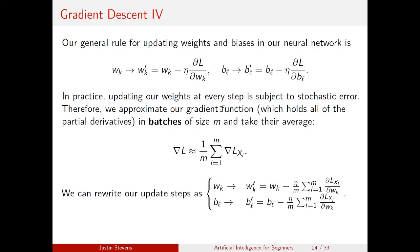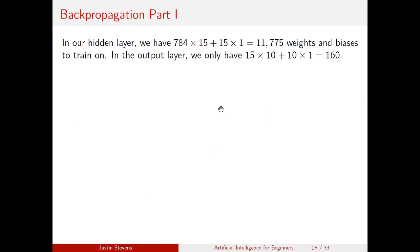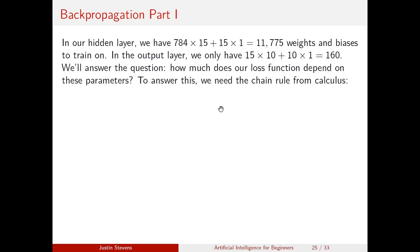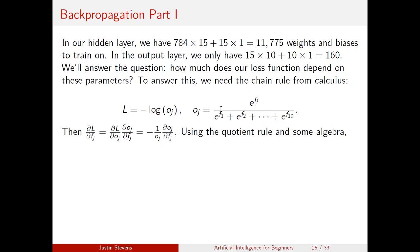The big idea is computing the partial derivatives of the loss with respect to the weights, which is a very non-trivial problem. In our hidden layer we had about 11,000 weights and biases, and in the output layer 160. We need to answer how much the loss function depends on each parameter, and to do that we need the chain rule from calculus.